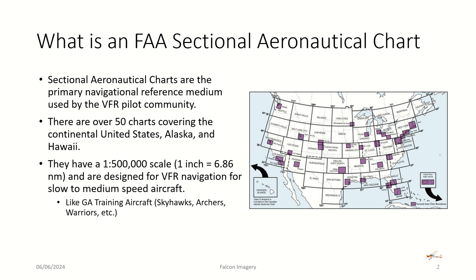Sectional charts have a scale of 1 to 500,000, or 1 inch equals 6.86 nautical miles. They're designed for VFR — visual flight rule — navigation for slow to medium speed aircraft, such as general aviation aircraft and training aircraft like Skyhawks, Archers, and Warriors.